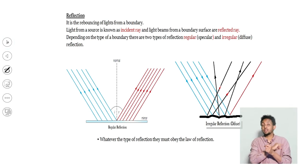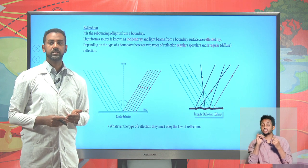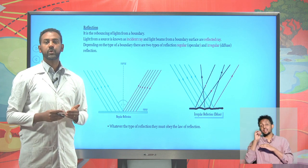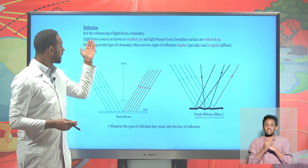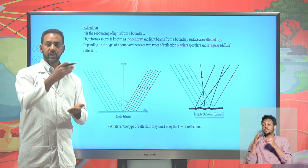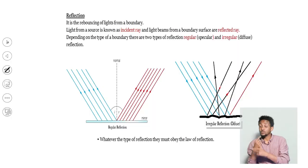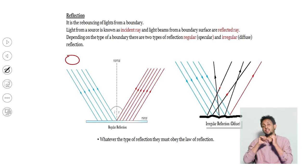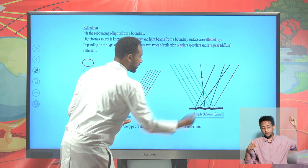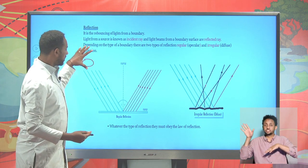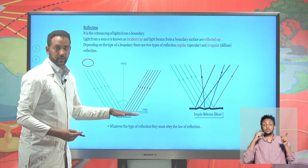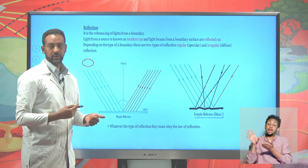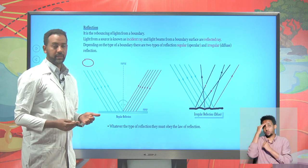Let's see some properties of waves: reflection, refraction, diffraction, and interference. Light as a wave exhibits all of these. Reflection means the rebounding of light from a given boundary. From a source, light may strike a mirror or obstacle and rebound — this is regular reflection, while scattering gives diffuse reflection. The light that rebounds from the boundary is known as the reflected wave.